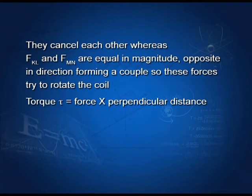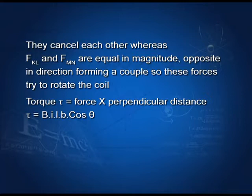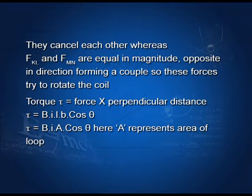So the torque τ equals force multiplied by the perpendicular distance between the two forces, which is b cosθ. Substituting these values, we get τ equals BIlb cosθ. Since length multiplied by breadth gives the area, the torque τ equals BIA cosθ, where A represents the area of the loop.